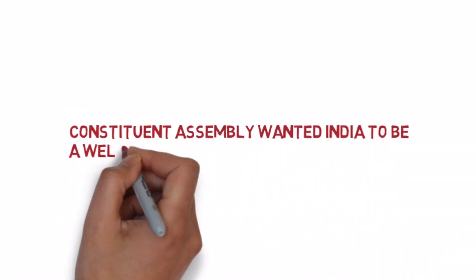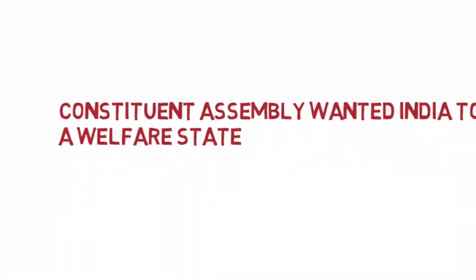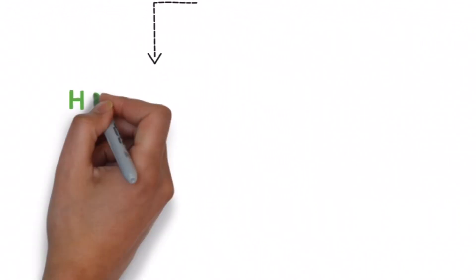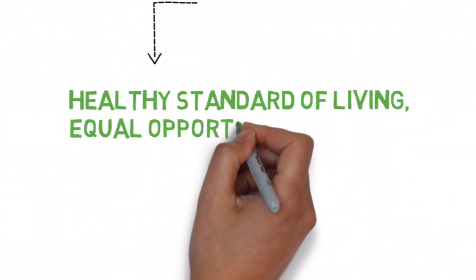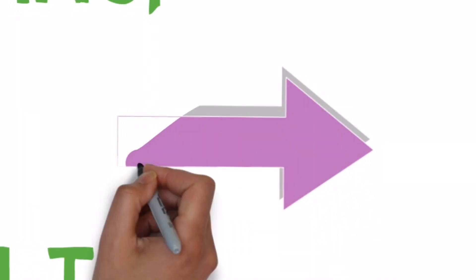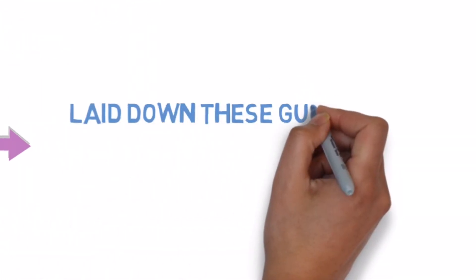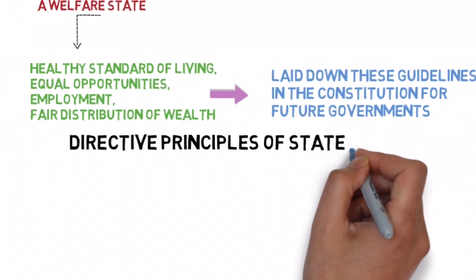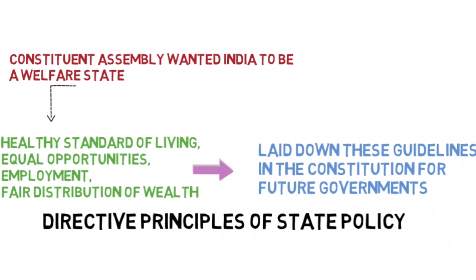The Members of the Constituent Assembly wanted India to be a welfare state, where citizens are guaranteed a healthy standard of living, equal opportunities, full employment and fair distribution of wealth. However, it was not possible at that time in 1949, so they laid down certain guidelines for all the future governments for the welfare of the people. These guidelines in the constitution are known as Directive Principles of State Policy.